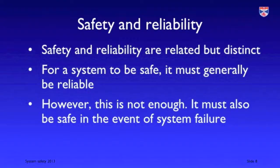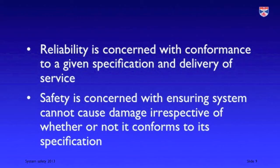If we get our system specification right and that specification is properly implemented, you might think that reliable operation means safe operation. Reliability is certainly essential for safety, but we have to allow for the possibility that a reliable system can be unsafe. Reliability in practice is about delivering a system that conforms to its specification, whereas safety is about delivering a system that is always safe, irrespective of whether or not it conforms to its specification.